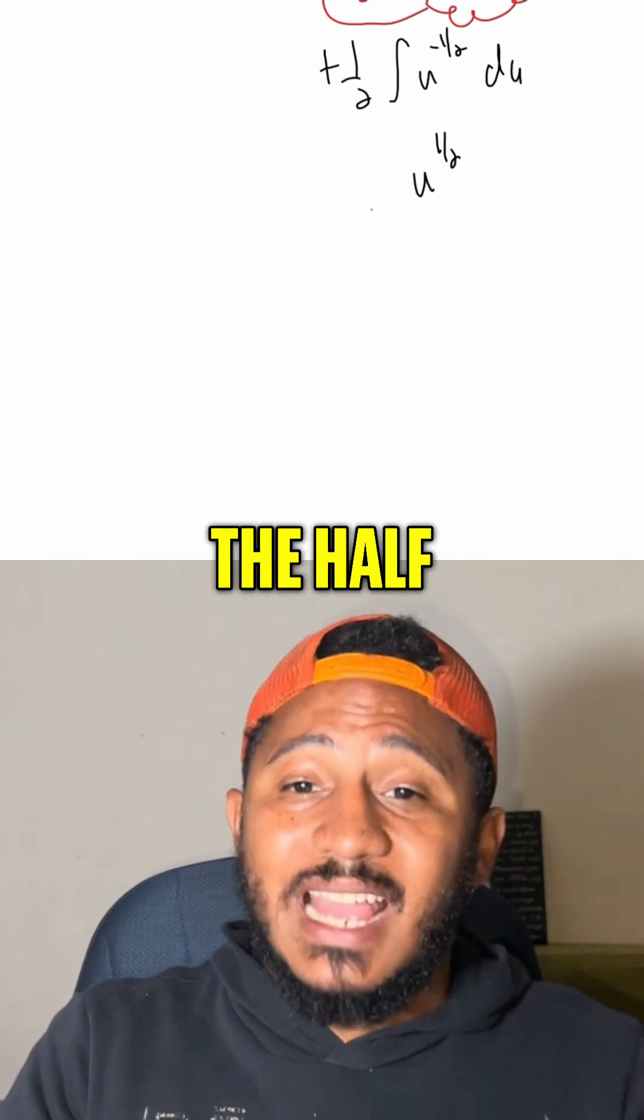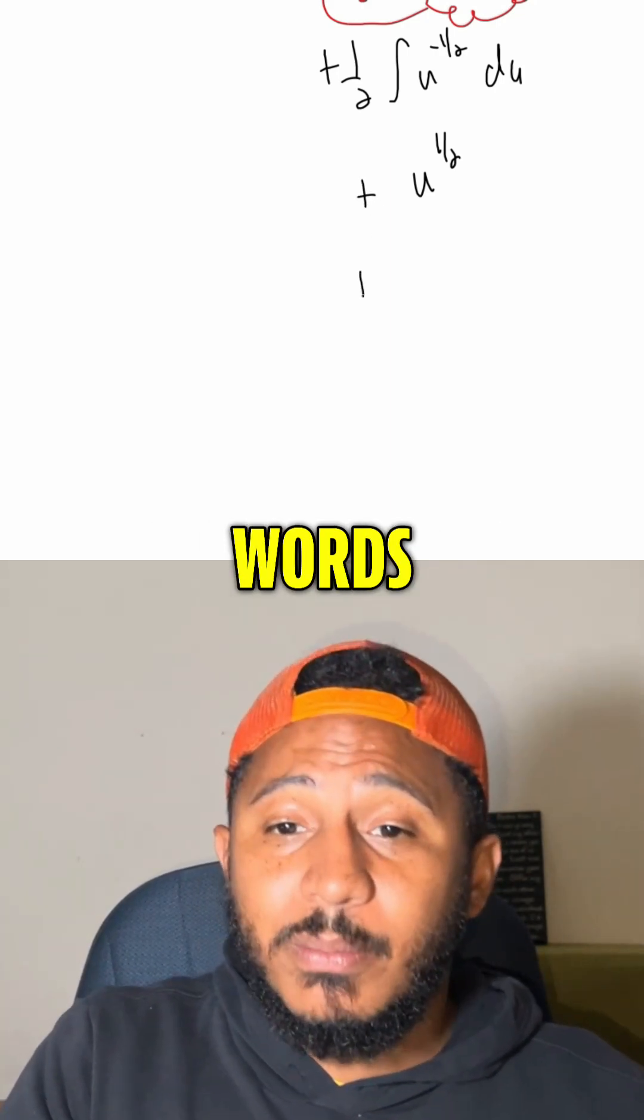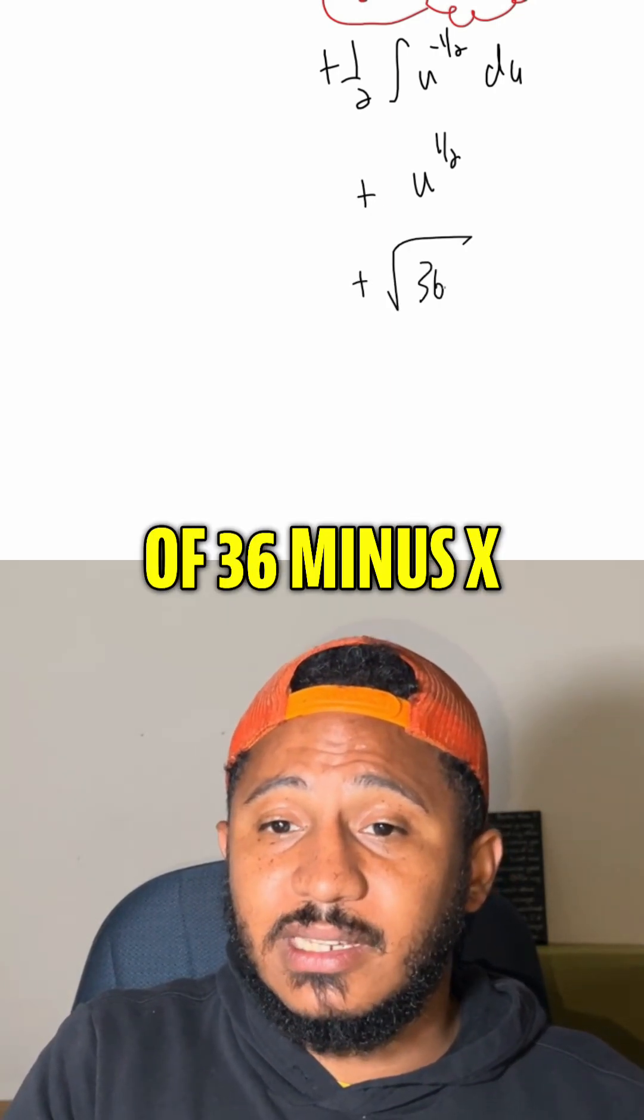Dividing by half, but that cancels with the half that's out in the front. So it's just plus u to the half, in other words, plus the square root of 36 minus x squared.